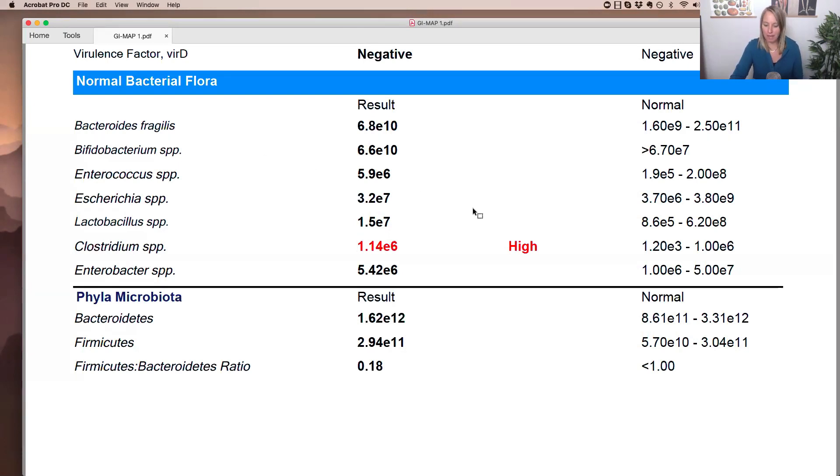Another thing that you can pick up from this normal bacteria flora section is if somebody might be at risk or may potentially have a small intestine bacterial overgrowth infection. Now, keep in mind the GI map is not a test of the small intestine and you cannot determine somebody has SIBO based off a GI map, but there are a few clues. One of them you might find in the normal bacteria flora section.